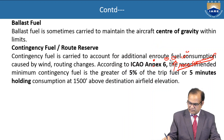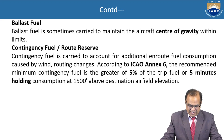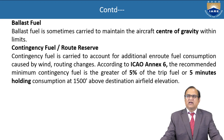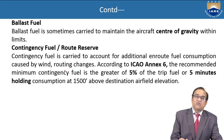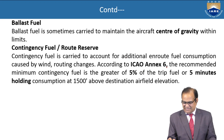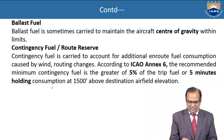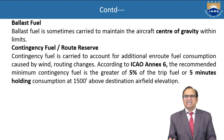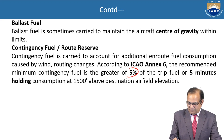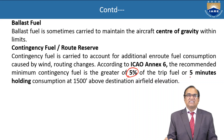Next is the contingency fuel or route reserve. Contingency fuel is carried to account for additional in-route fuel consumption caused by wind routing changes. According to ICAO-6, the recommended minimum contingency fuel is greater than 5% of the trip fuel or 5 minutes holding consumption at 15,000 feet above the destination airfield — whichever is greater.